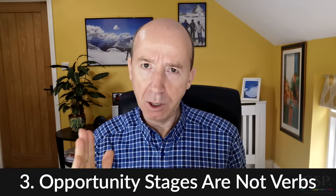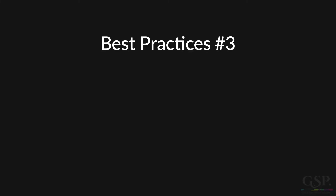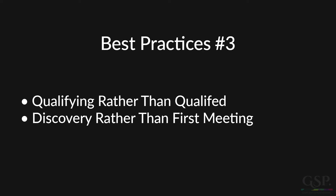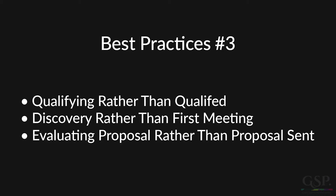Here's mistake number three: opportunity stages are not verbs. The stages should not be milestones that define the status of an opportunity at a specific point in time. Instead, they should reflect the status of an opportunity over time. For example, 'qualifying' rather than 'qualified,' 'discovery' rather than 'first meeting,' or 'evaluating proposal' rather than 'proposal sent.' In other words, the stages reflect activities that happen over a period of time rather than a single event.